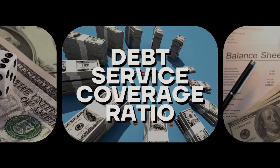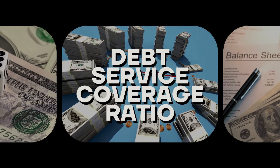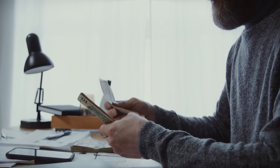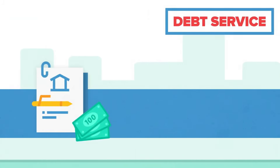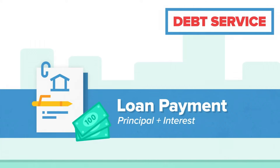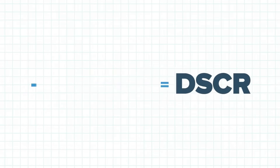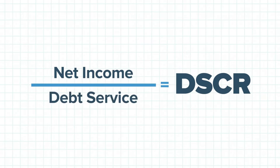Number seven — this is a big one. This is the debt service coverage ratio, the DSCR. In the states, this ratio is used for lenders to quickly determine how much your property is bringing in annually and compare that to what a bank would willingly and gladly lend you on the property. There's something called a DSCR loan — a debt service coverage loan. What they're looking for is the property's ability to pay its debt obligations with its operating income. It's calculated by dividing the property's net operating income by its debt service payments.